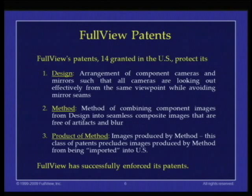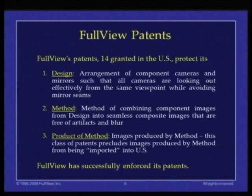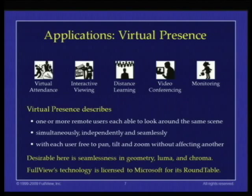FullView's 14 patents basically protect its design — the physical camera arrangement, the method of putting the images together, and quite importantly, the product of method. The thinking was we were concerned that if images are being produced in Africa and shipped to the US, because the physical device is sitting in Africa we'd have no patent protection — so we have protection on those images, they can't be brought into the US. We have successfully enforced our patents against both fairly small and very large entities. Some of these applications are just coming into the market now.